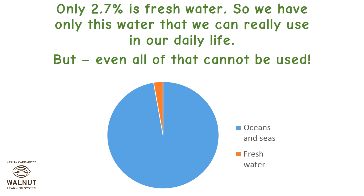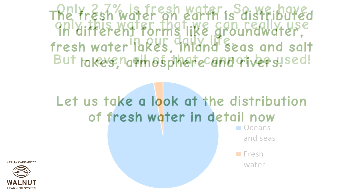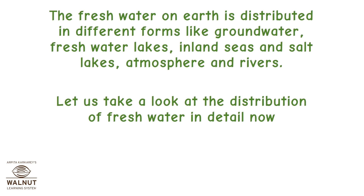Only 2.7% is fresh water. So we have only this water that we can really use in our daily life. But even all of that cannot be used. The fresh water on earth is distributed in different forms like groundwater, freshwater lakes, inland seas and salt lakes, atmosphere, and rivers.